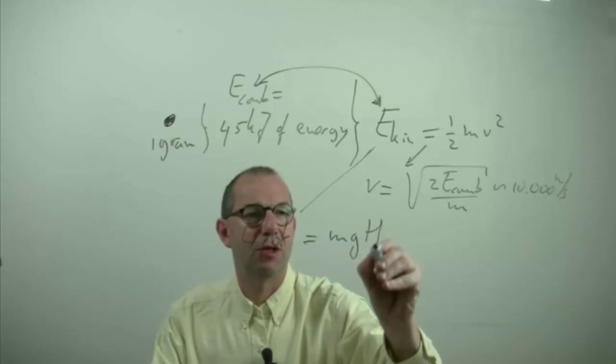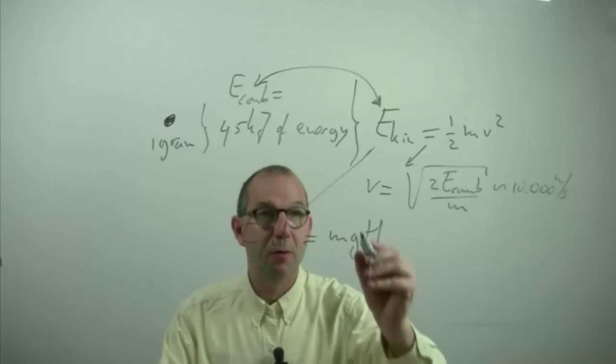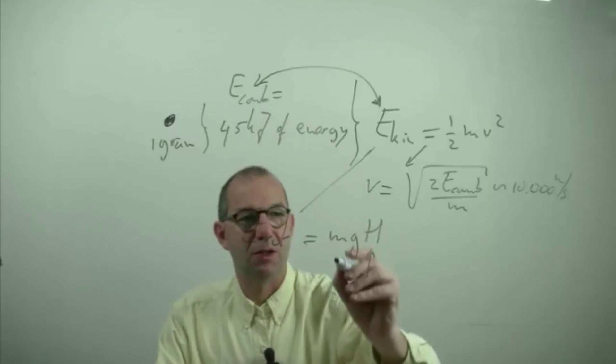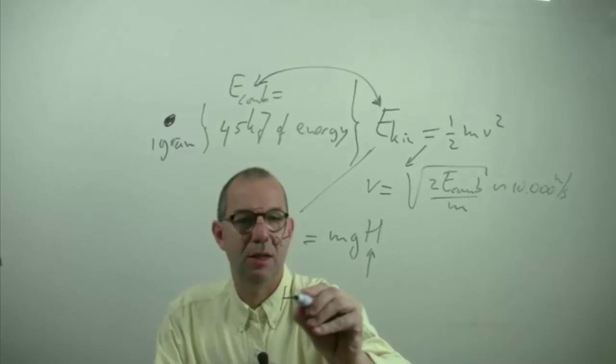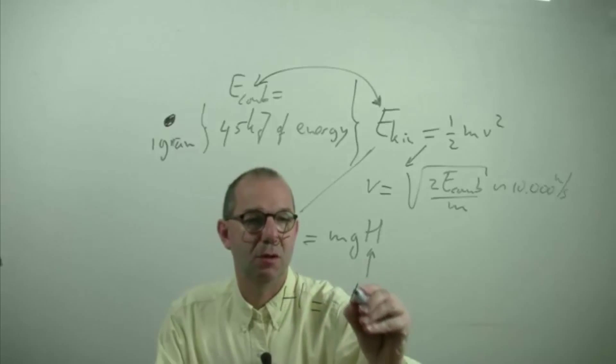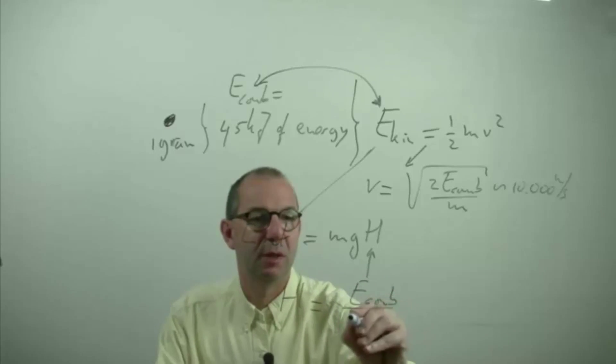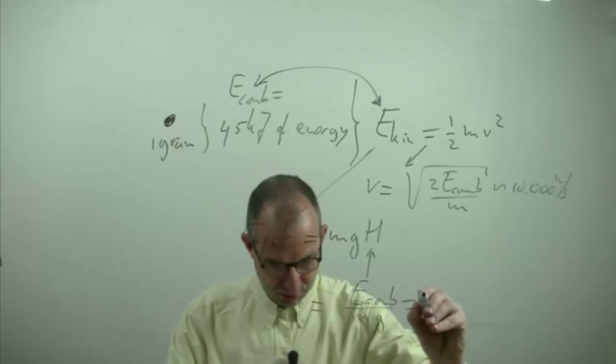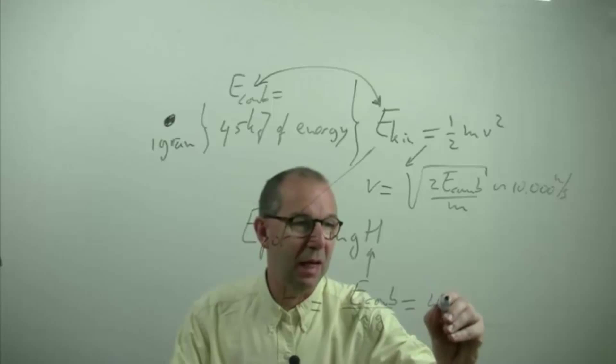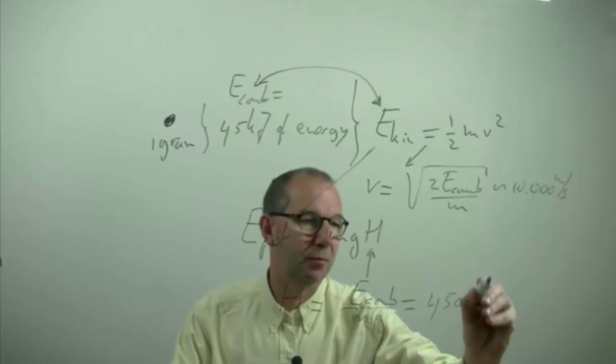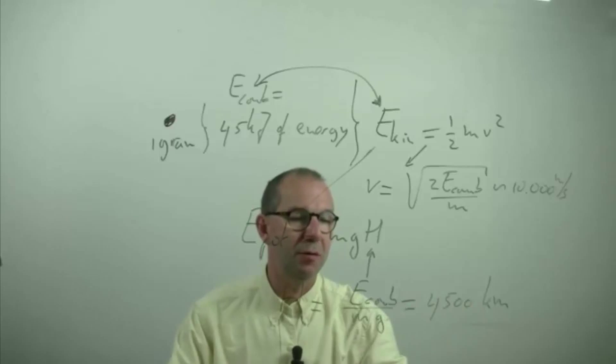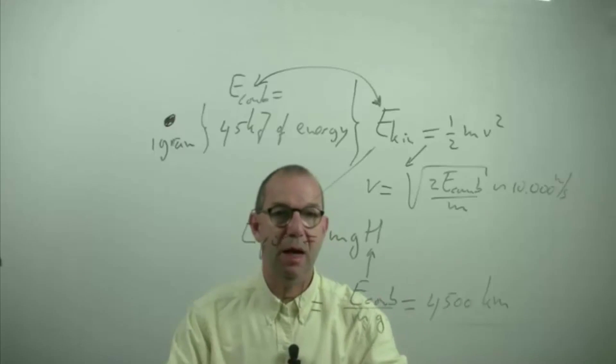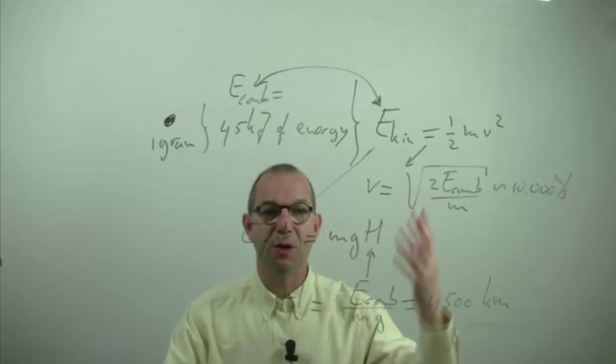Mgh, and the question is what would be this H. Well, the same energy conservation will tell us that H becomes combustion energy that is available to lift, divided by mg, which is again an enormous number, 4500 kilometers above the earth. You are quite a bit outside our atmosphere, basically this particle is now floating somewhere in space.